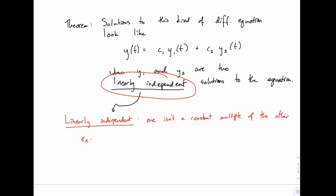Let me give you an example. If, for example, the two solutions were 3 times the sine of t and negative 4 times the sine of t, those would not be linearly independent because you could get from 3 sine of t to negative 4 sine of t by multiplying by negative 4 thirds. So that's a constant multiple. But if it was 3 sine of t and negative 4 cosine of t, those would be linearly independent. One isn't simply a constant multiple of the other.